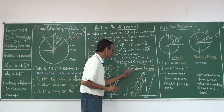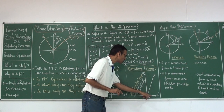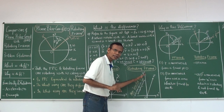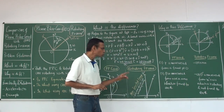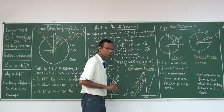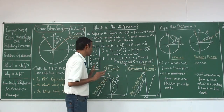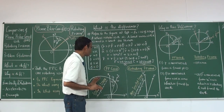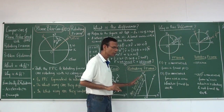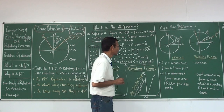In the rotating frame, the position, velocity, and acceleration obtained are with respect to the X-prime Y-prime axis, which is rotating and not fixed. So it is a non-inertial frame. The plane polar coordinate gives us position, velocity, and acceleration with respect to the X-Y fixed frame, making it an inertial frame. This is the most important point: plane polar coordinates is an inertial frame of reference giving real values, while the rotating frame is a non-inertial frame of reference.